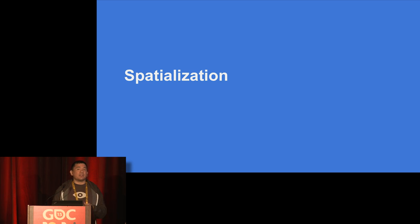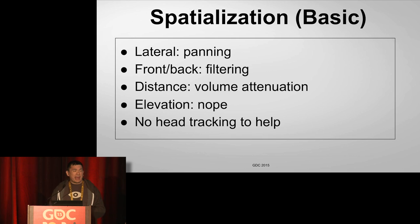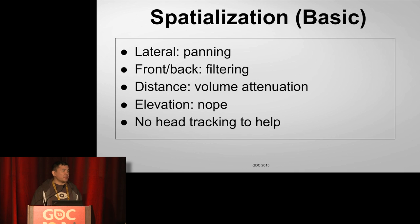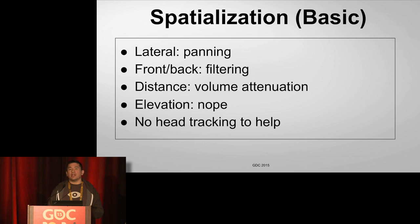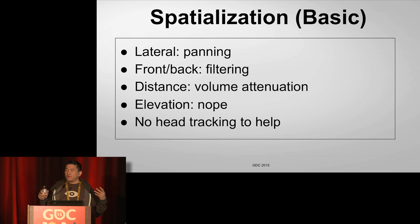So why does all that matter? Localization is how humans figure out where a sound is coming from. Knowing that, we can reverse engineer it into spatialization — taking a monophonic sound and making someone believe it's coming from a certain spot. We've done this before in the old days. We used panning for left and right. For front-back, some people applied a low-pass filter as sound moved behind you. For distance, we used volume attenuation. For elevation, you had nothing. And with no head tracking, all it took was someone using fixed speakers and turning their head to blow the entire illusion.